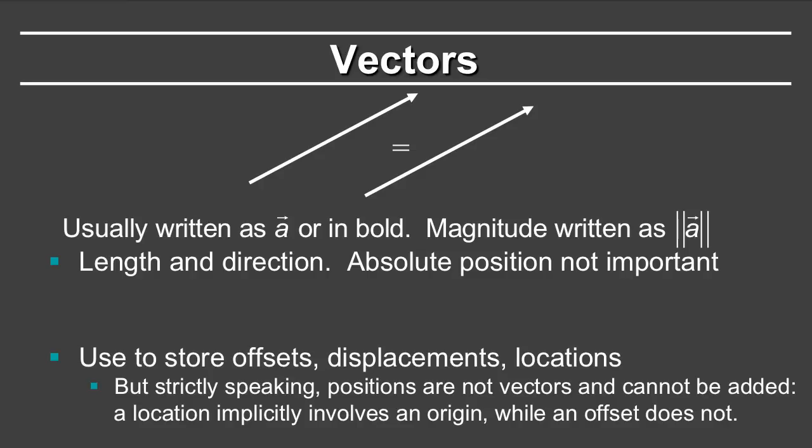Vectors are used to store offsets, displacements, and locations. But strictly speaking, there is a minor technical difference that a position is not strictly speaking a vector, and in fact you cannot add positions as vectors, because to have a position such as two units on the x-axis, you implicitly require an origin, whereas a vector is supposed to be independent of the origin. Nevertheless, it is very convenient to also represent positions as vectors and to multiply them as matrices to do various transformations.